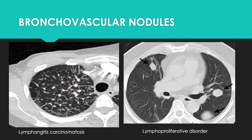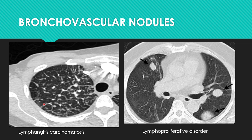Bronchovascular nodules have a prominent networking pattern or nodules along the bronchovascular bundles. A very common example is lymphangitis carcinomatosis and lymphoproliferative disorders. They are also commonly seen in Kaposi sarcoma in HIV patients. In sarcoid patients, beaded nodules along fissures in the subpleural region may also be seen. Sometimes infections can produce this pattern. Whenever you see nodules along the bronchovascular bundle, these are the common differentials to keep in mind.